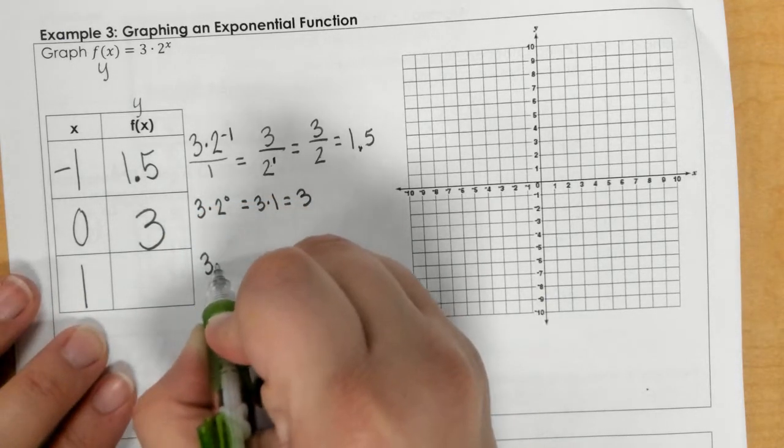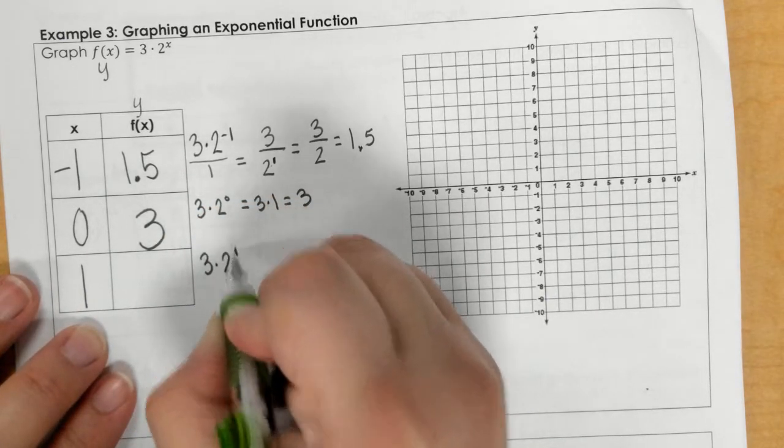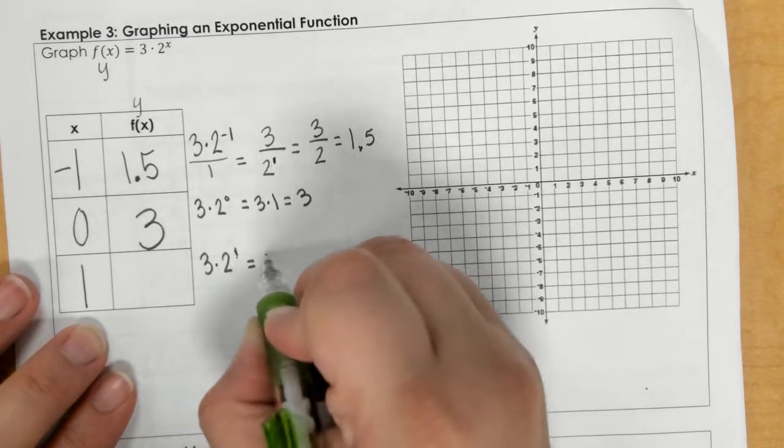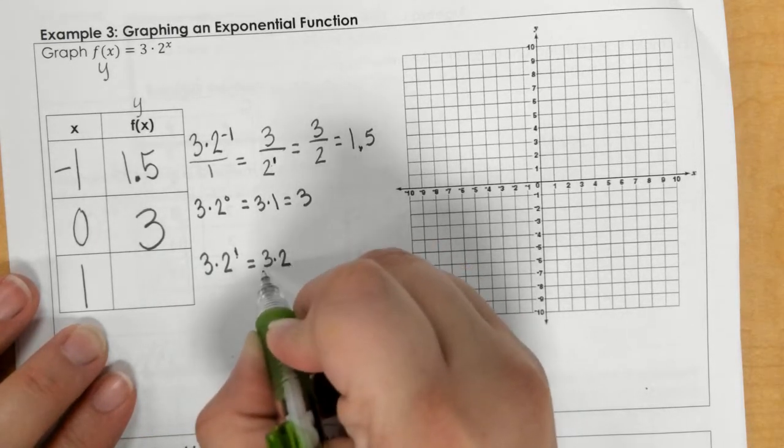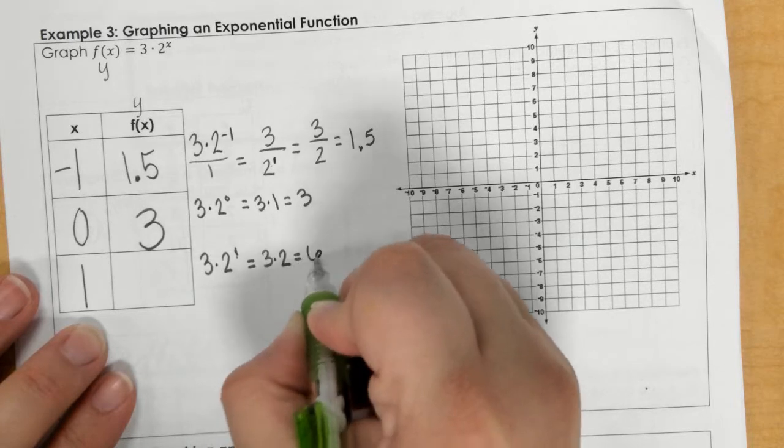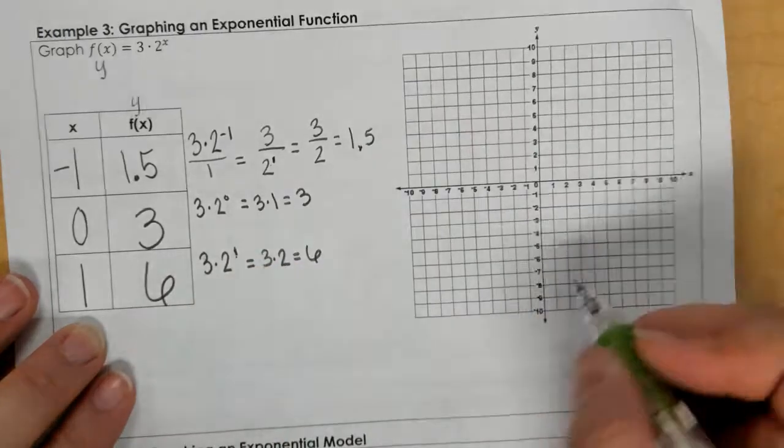So now we have 3 times 2 to the first power. Well, 2 to the first power is just 2, so 3 times 2 is 6. And I'm going to graph it.